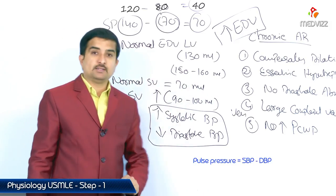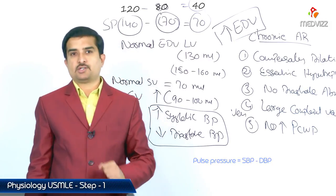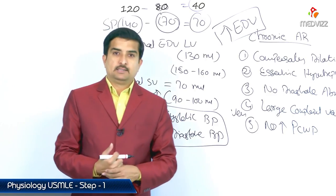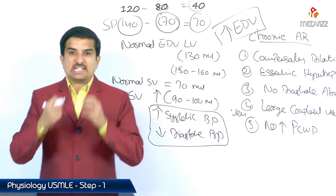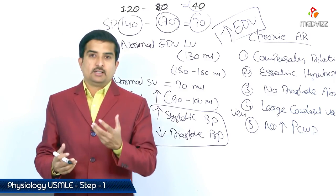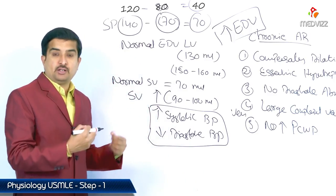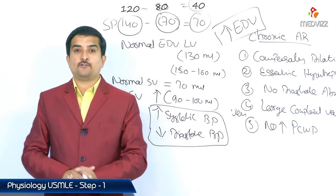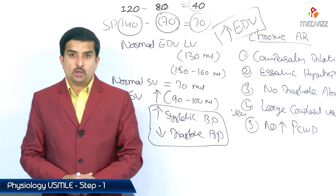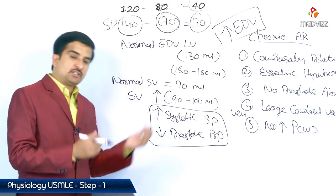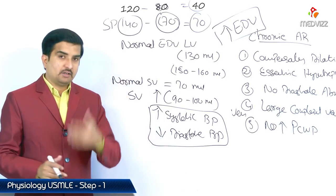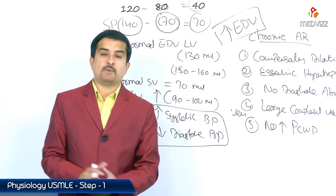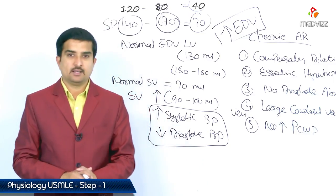Pulse pressure also increases in chronic aortic regurgitation. Additionally, increased blood flow to the left ventricle causes increased ventricular wall stress with decreased coronary perfusion pressure in diastole, which can lead to angina even in the absence of coronary artery disease. Therefore, angina without coronary artery disease should raise suspicion of chronic aortic regurgitation.